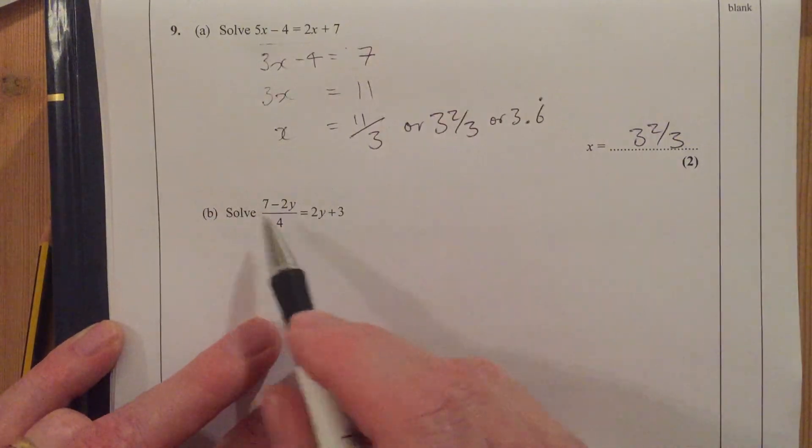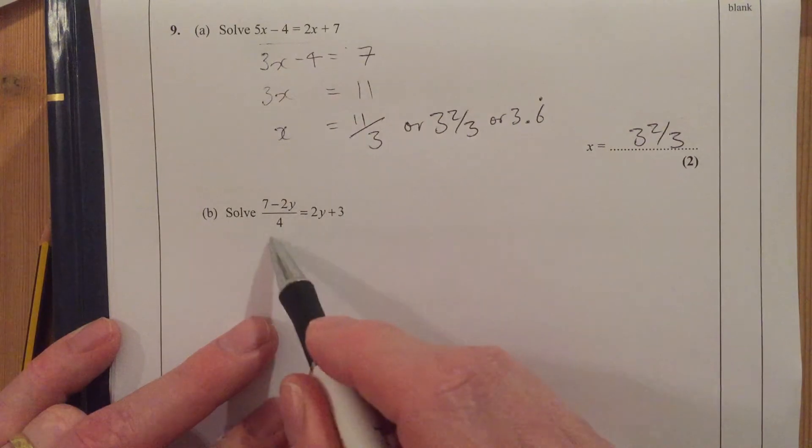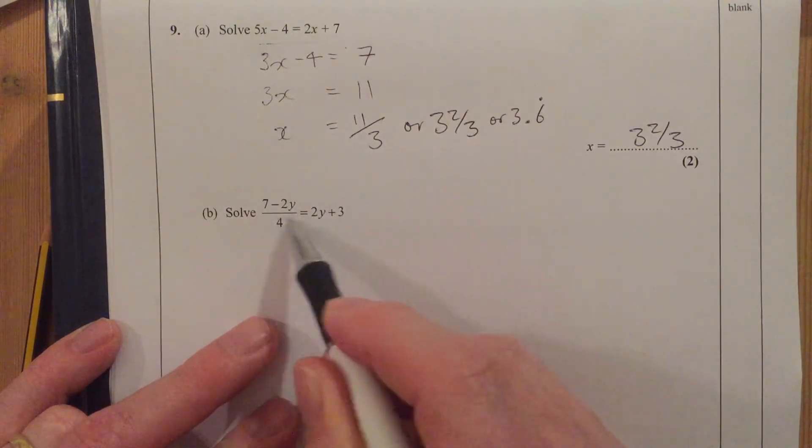Okay, slightly trickier this one. We've got a fraction in it. First thing we want to do is get rid of the fraction. So what are we going to do to both sides? Well, we're going to times by 4.